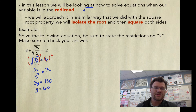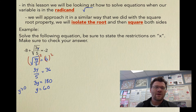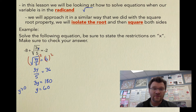We need to state our restrictions. Our restriction here is that y has to be greater than or equal to 0, because anything we put in that is greater than or equal to 0 will give us a positive number, and we can take the square root of that. So y equals 60 definitely fits into that restriction.